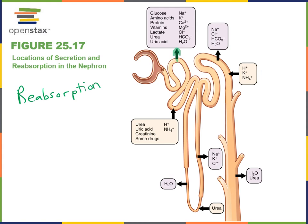For example, sodium chloride is a major solute that's reabsorbed in large amounts by the proximal convoluted tubule. Some essential nutrients like glucose, amino acids, proteins, vitamins, and lactate are reabsorbed in very large amounts — essentially 100% of the glucose is reabsorbed at the proximal convoluted tubule. For many of the vitamins, essentially 100% will also be reabsorbed at the proximal convoluted tubule.